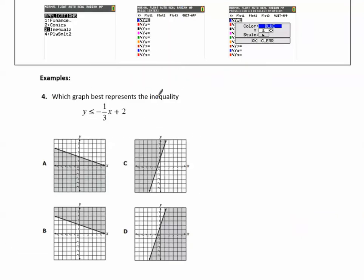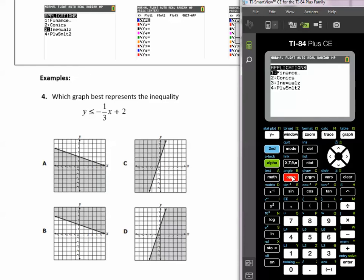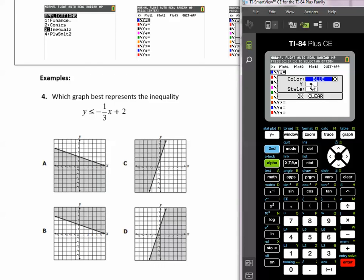It'll take us to the y equals screen. We're going to do it for example number four. I'm going to press apps, three, enter. It takes me to the y equals screen. I'm going to clear things from earlier. The next step is to arrow over so that I'm highlighting to the left of the equal sign. I'm going to press enter, and then I'm going to scroll down where it says y equals. I want it to say less than or equal to. So here I arrow until it says less than or equal to. Then I'm going to arrow down to OK and press enter.